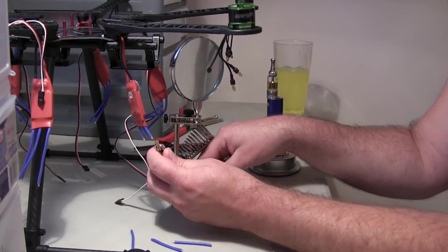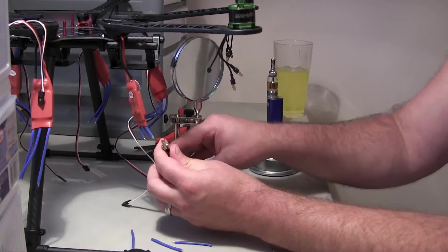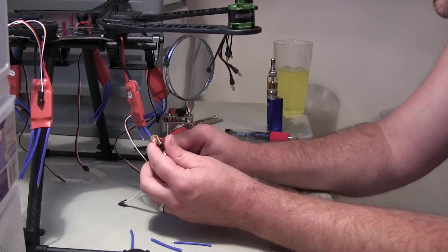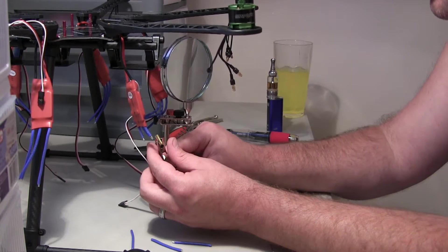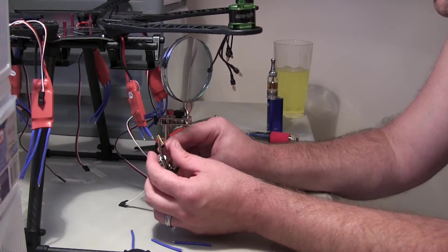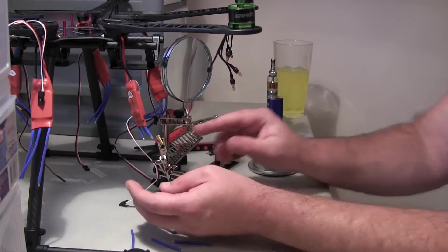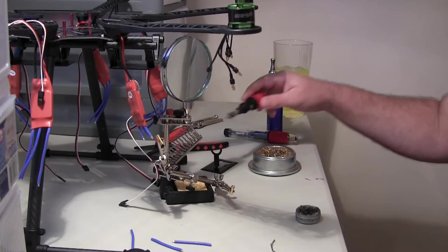So what we're going to do, I'm just going to put it right up here. I'm going to heat up the bullet connector. And we're going to drop the tinned wire right into it. And we're going to let it get molten together and meld.